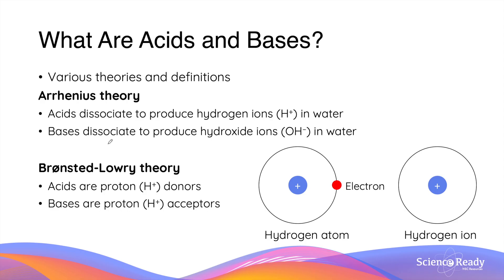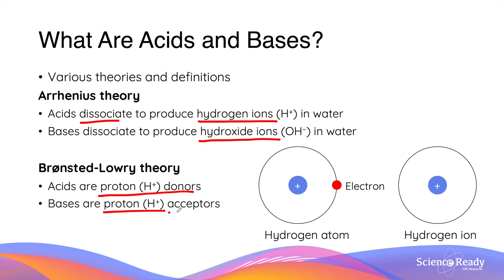There are various theories and definitions of acids and bases, so there is not a single answer to the question of what acids and bases are. In the Arrhenius theory, acids are molecules that dissociate to produce hydrogen ions in water, while bases are molecules that dissociate to produce hydroxide ions in water. Another prominent theory is the Bronsted-Lowry theory, which describes acids as proton donors and bases as proton acceptors.